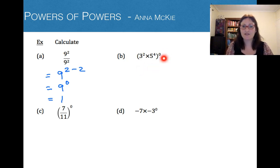Part b: this great big number in here, we don't need to work it out first. 3 squared would be 9 times by 5 to the power of 4—big number. You don't need to do it because it's all raised to the power of 0, so the answer for that is just 1.